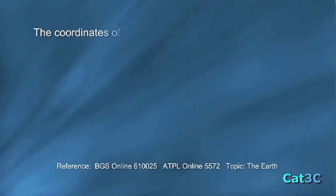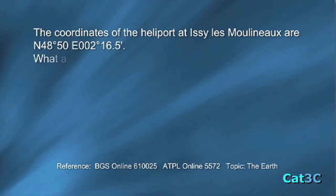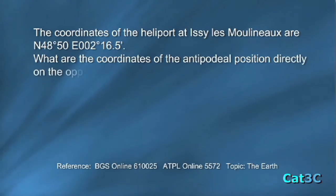The coordinates of the heliport at EC Le Moulinot are north 48 degrees 50 minutes, east 2 degrees 16.5 minutes. What are the coordinates of the antipodeal position directly on the opposite side of the earth?